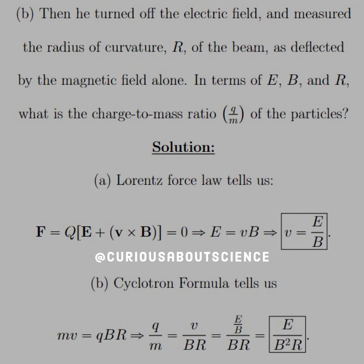And we just found V from Part A, so we put that in. Notice with the fraction in the numerator, we just knock down the denominators to one another, leaving us with E over B squared R.